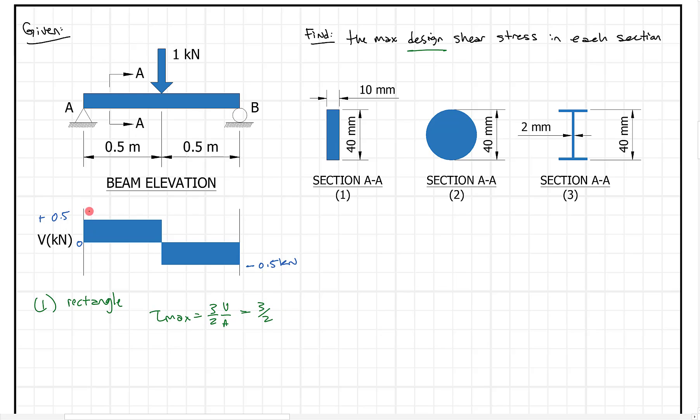In this case, our maximum shear is half a kilonewton, and I'm going to change that to 500 newtons divided by our area. Our area here is just 40 millimeters times 10 millimeters. And when we do the math out, what I get is a maximum shear stress of about 1.9 megapascals. So that's our answer for part one.